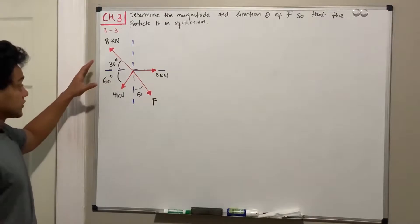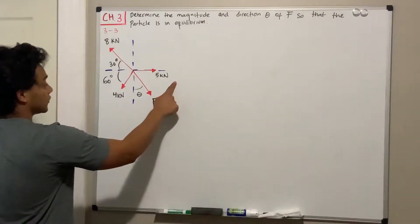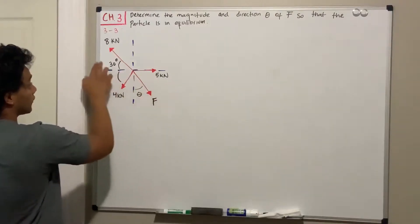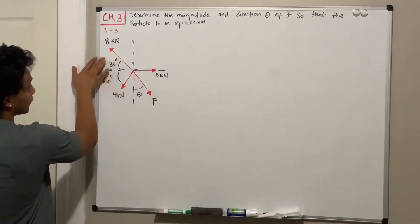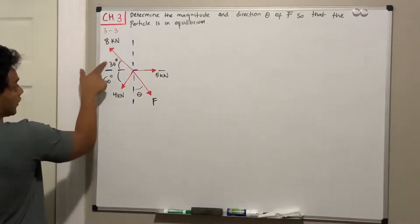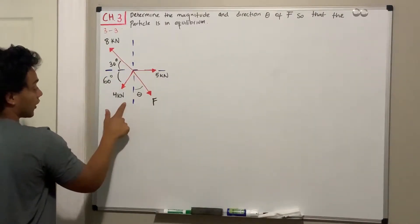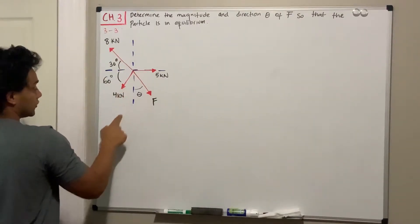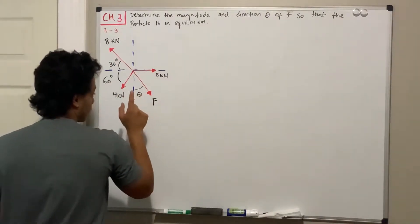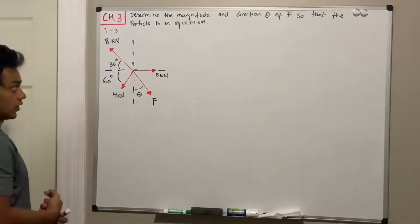We've got four forces in total. We've got five kilonewtons going in the x direction to the right. We have eight kilonewtons going left and up, and they're giving us the angle. We also have four kilonewtons going down and left. And last, we've got our force F, which is our unknown with an unknown direction.